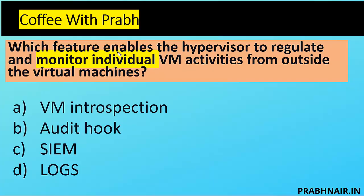First coffee shot: which feature enables the hypervisor to regulate and monitor individual VM activities from outside the virtual machine? The question is asking about a feature of the hypervisor. Option A is VM introspection. VM introspection is a technique for monitoring the virtual machine in a running state, which is helpful for debugging, forensic investigations, malware analysis, and more. This approach is widely used for security applications, software debugging, and system management — and it can be done with the help of the hypervisor.